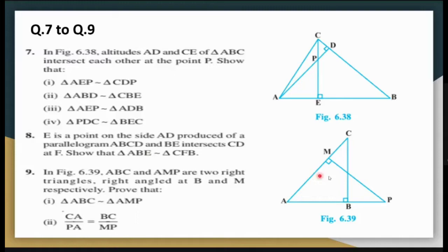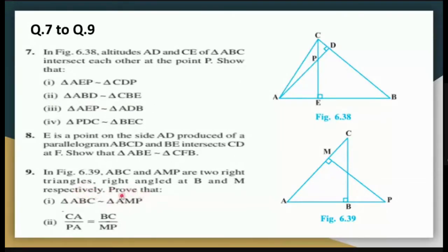Question 9: I need to prove triangle ABC similar to triangle AMP. Angle A is common, and both have a 90-degree angle. The triangles become similar by the AA rule of similarity. Once similar, by CPSC I get AB upon AM equals CA upon PA equals BC upon MP. Taking the last two ratios, CA upon PA equals BC upon MP, which is what was to be proved.